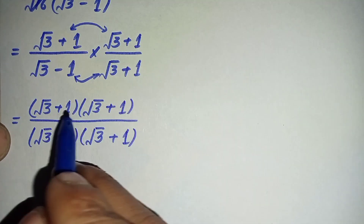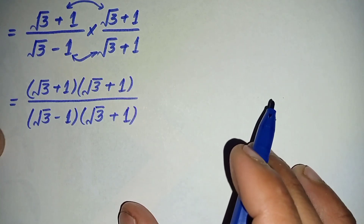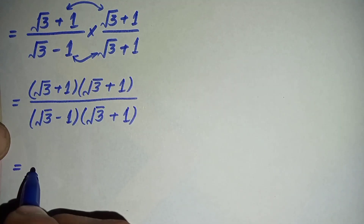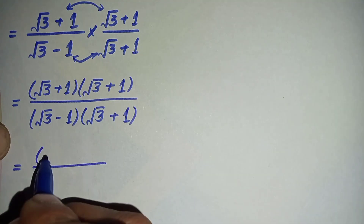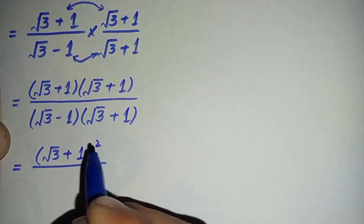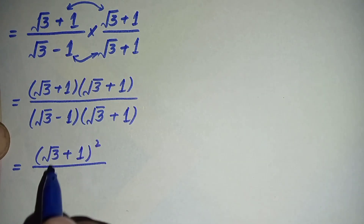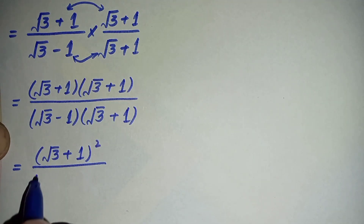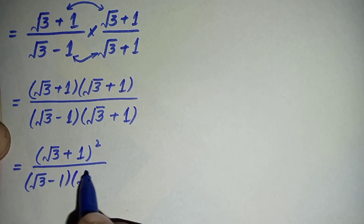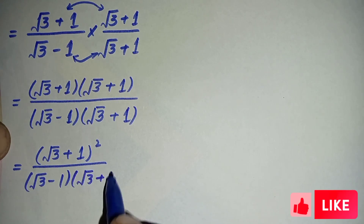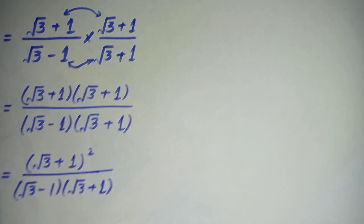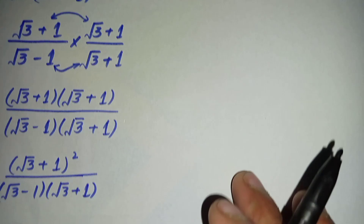Now in the numerator this number is multiplied two times, so we will take the square of this number. It will become square root of 3 plus 1, whole square, divided by square root of 3 minus 1, times square root of 3 plus 1.